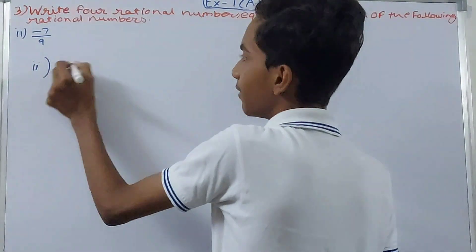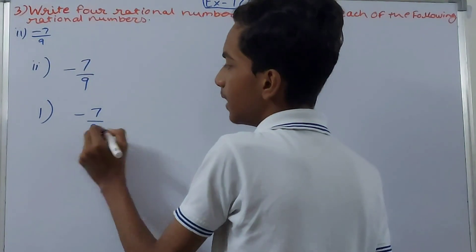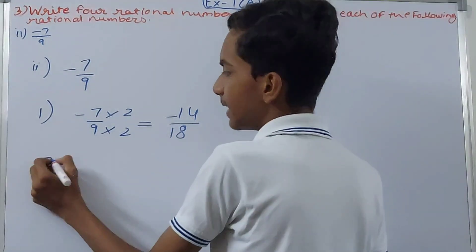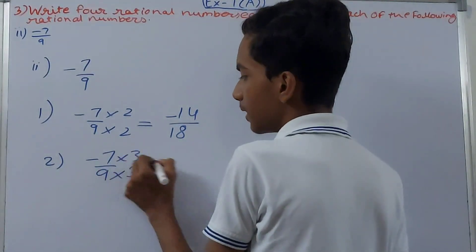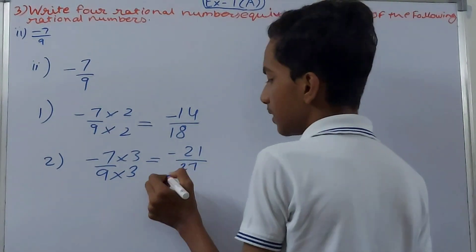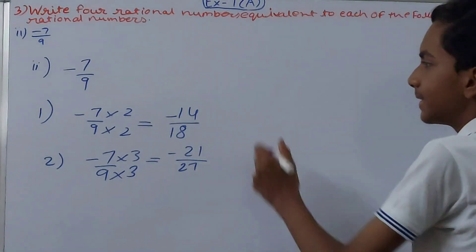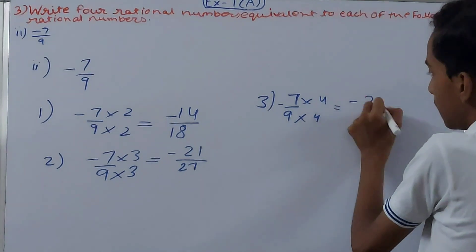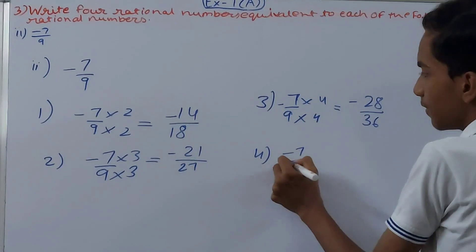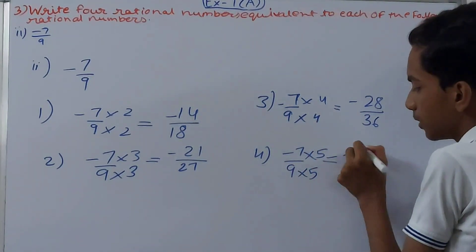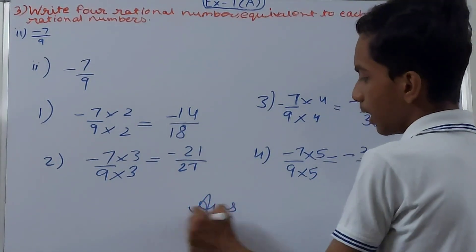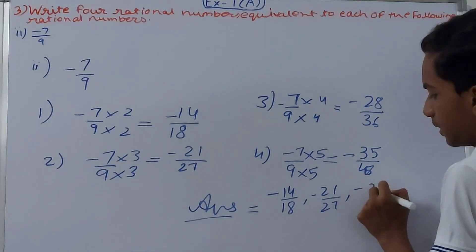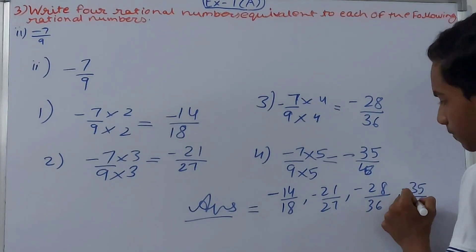Now the second part: we have minus 7 by 9. We'll multiply by 2, giving minus 14 upon 18. The second one: minus 7 by 9 into 3, which is minus 21 upon 27. The third one: minus 7 by 9 into 4, giving minus 28 upon 36. And the last one: minus 7 by 9 into 5, giving minus 35 upon 45. So our four equivalent rational numbers are: minus 14 by 18, minus 21 by 27, minus 28 by 36, and minus 35 by 45.